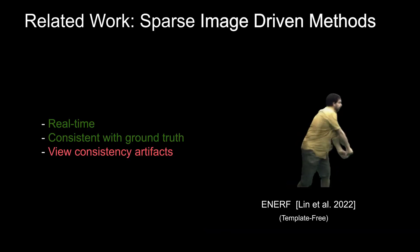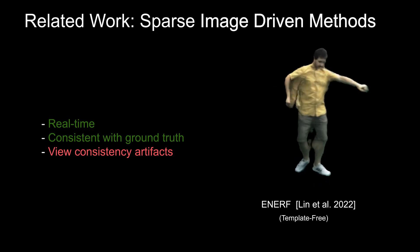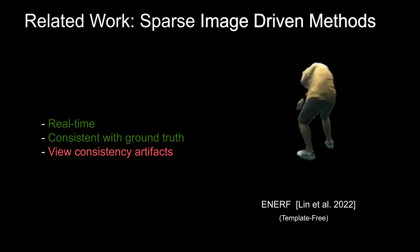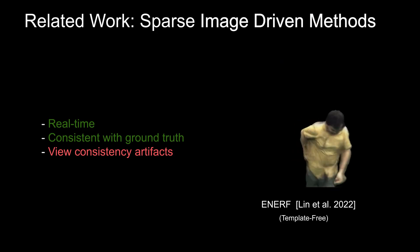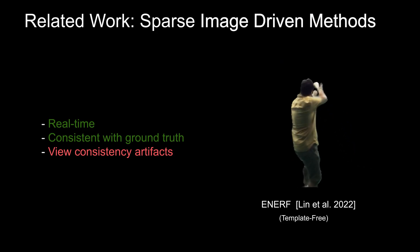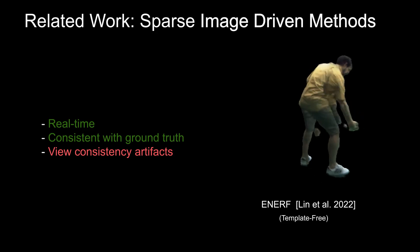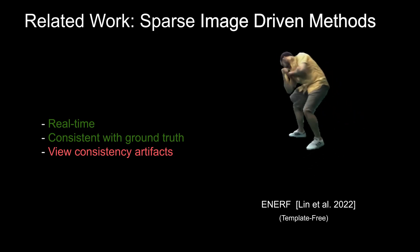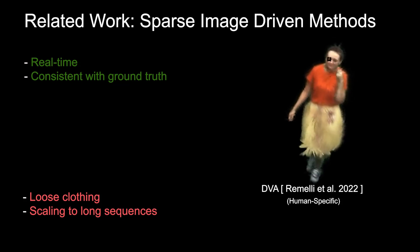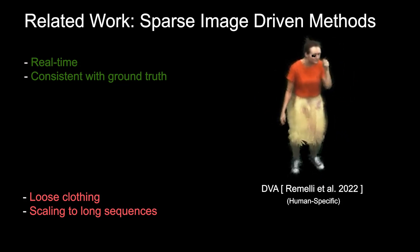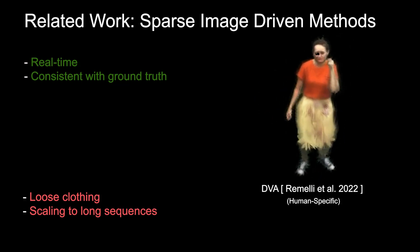Recently, there have also been works on free viewpoint rendering given sparse camera view observations. NRF proposes an efficient free-view rendering approach for general scenes using a radiance field representation. While their method achieves real-time performance, the most closely related work to our problem setting is DVA, which represents the virtual character as volumetric primitives loosely attached to a mesh.